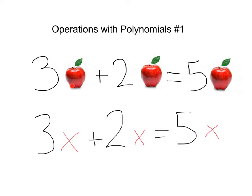Well, apples are kind of like variables, right? I can have three times x, I can add that to two times x, and that's going to give me five x. Just like we added our apples together, we could add our x's together.